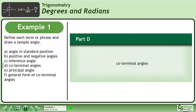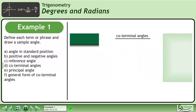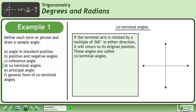In Part D, we'll define coterminal angles. If the terminal arm is rotated by a multiple of 360 degrees in either direction, it will return to its original position. These angles are called coterminal angles.